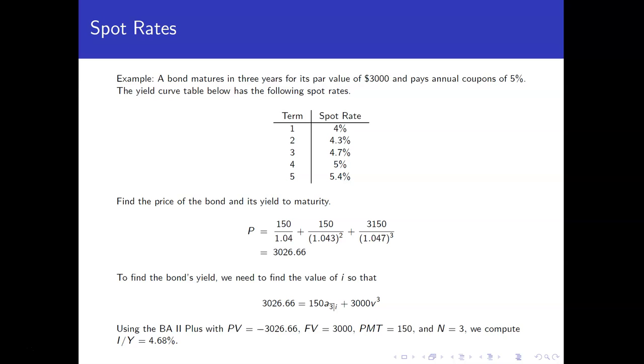And at time 3, we'll not only get the $150 coupon, but we'll also get the $3,000 redemption value. So, we need to discount each of those cash flows using the spot rates that are given to us in the yield curve table.